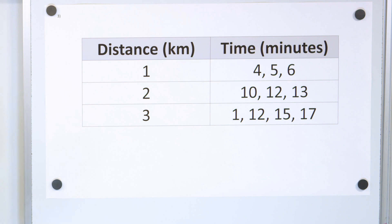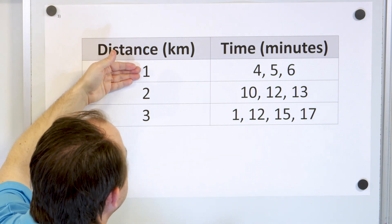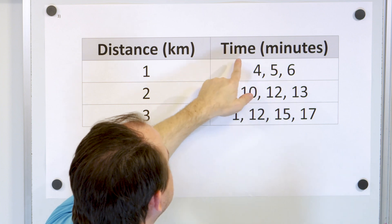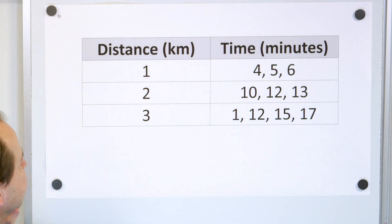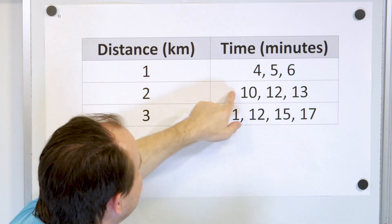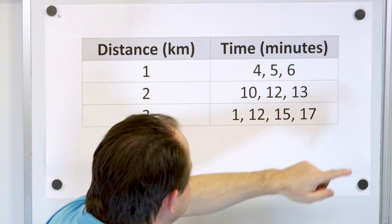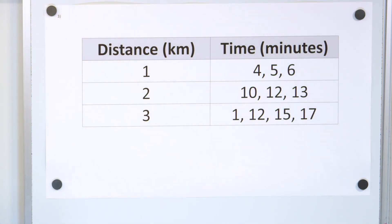Here's our last problem. We have a running club where we keep track of the distance and time that the members are running. With a one kilometer distance run, we have three different people making four minute, five minute, six minute times. Two kilometer run, we have this data. Three kilometer run, we have this data. So let's plot this in a scatter plot and see if we can answer a few questions.